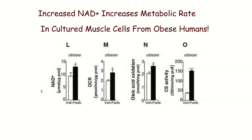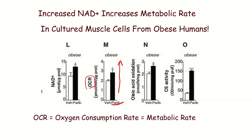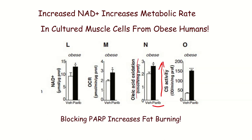From that same study with mice, they took obese humans, took a cell culture biopsy from their muscles, cultured those muscle cells, and gave them Olaparib. The black bars show results with Olaparib. In muscle tissue from obese humans, giving them Olaparib causes NAD+ levels to go up, because the obese humans are making a lot of PARP and PARP is stealing the NAD+. Block the PARP and NAD+ goes up. OCR — oxygen consumption rate — also shows that the metabolic rate of muscles from obese humans goes up if you block PARP. Oleic acid oxidation, meaning fat burning, also increases when you block PARP: obese human muscle tissue burns more fat.